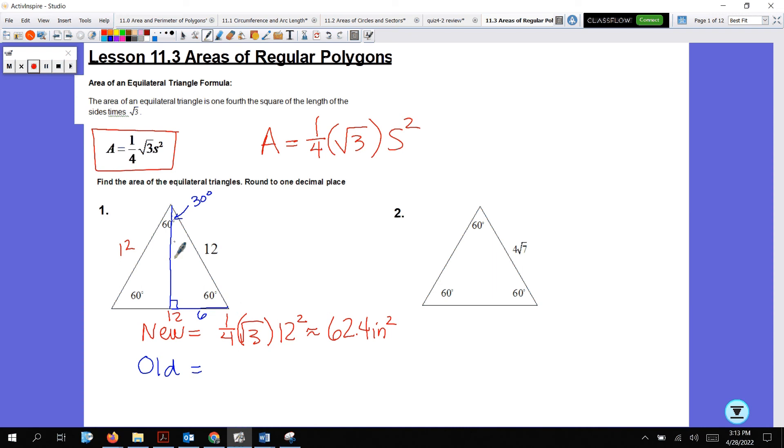30-60-90 special right triangle. Remember, the hypotenuse is 2 times the short leg. So the short leg is this section right here, 12 divided by 2 is 6. Then the long leg, which is the height of an equilateral triangle, is root 3 times bigger, so 6 root 3. Now we have all the information we need. So the old one is one-half base times 12 times the height, which is 6 root 3. I also get 62.4 inches squared.